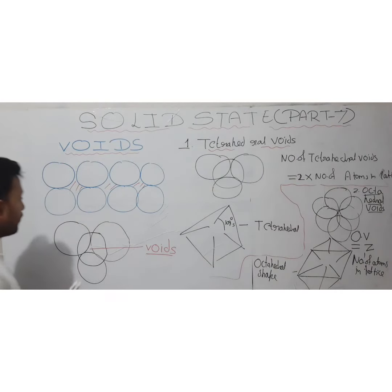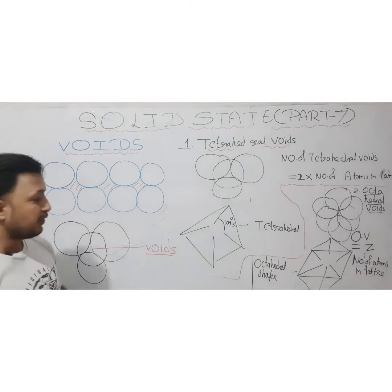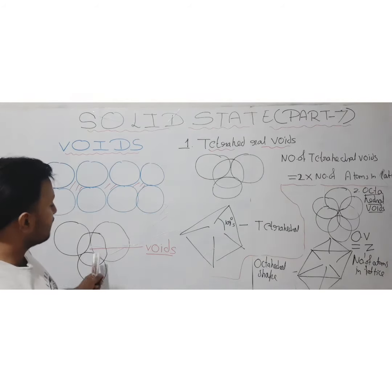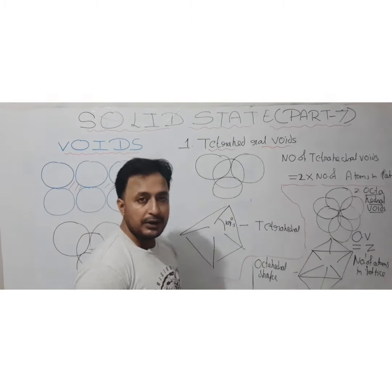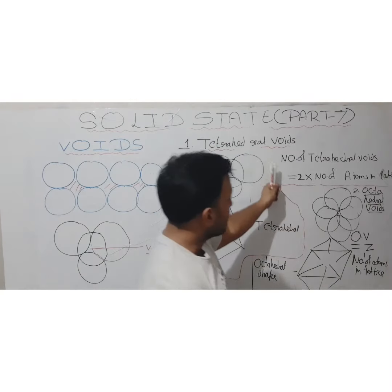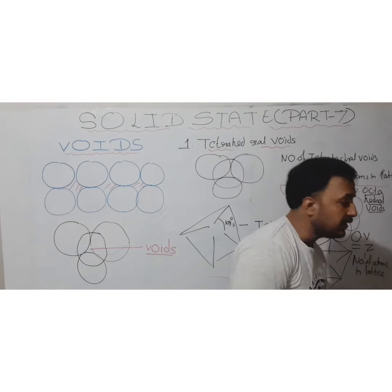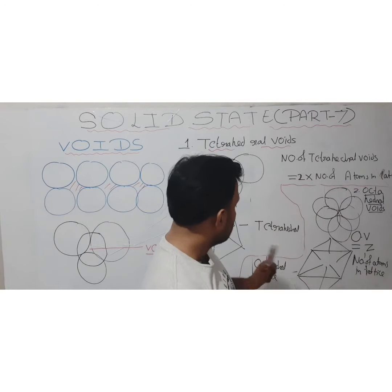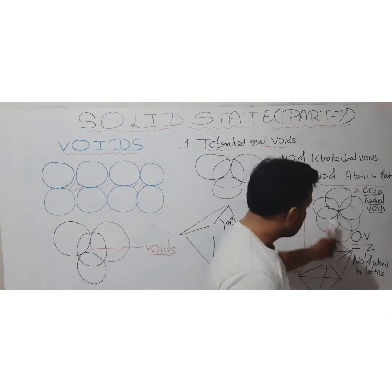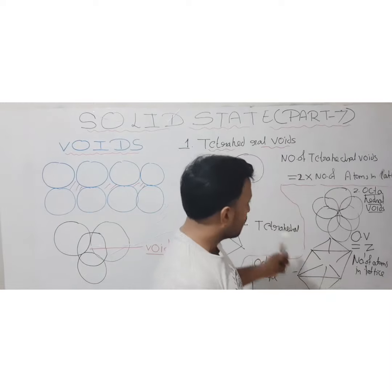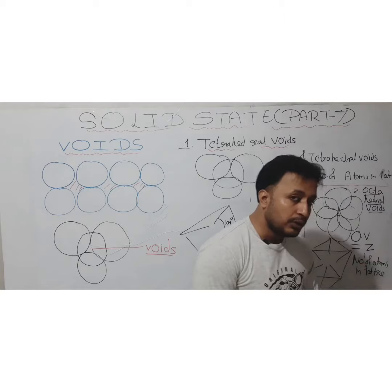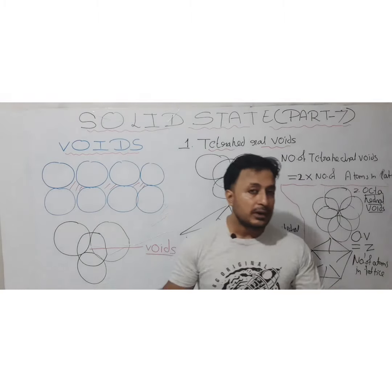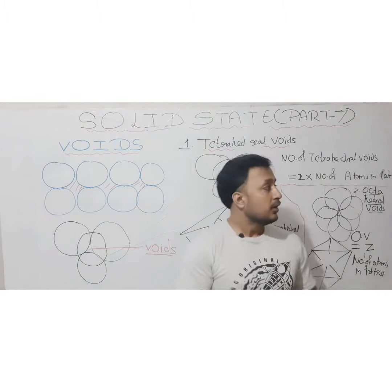To summarize: voids are empty spaces covered by a number of spheres giving a specific shape. When 4 spheres cover a void it is a tetrahedral void, with count equal to twice the number of atoms in the lattice. When 6 spheres surround a void it is an octahedral void, with count equal to the number of atoms in the lattice.